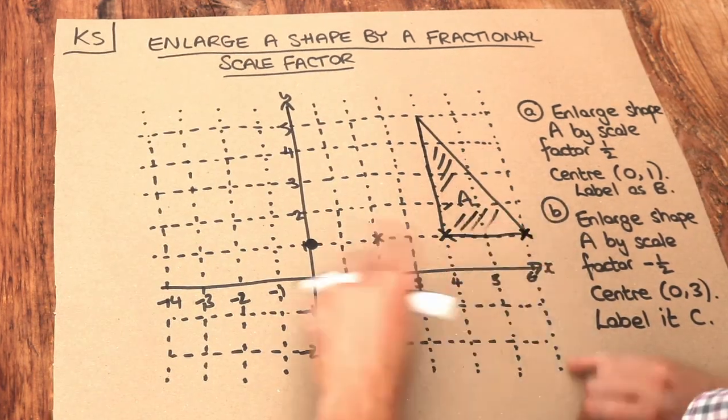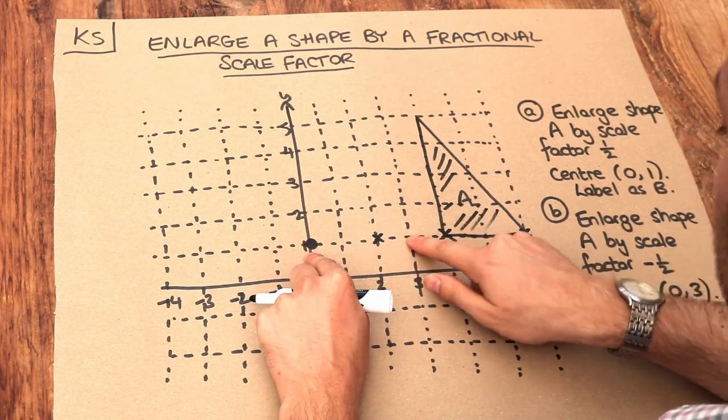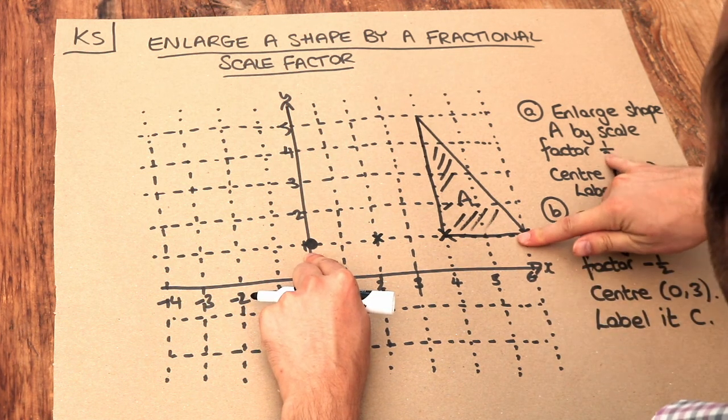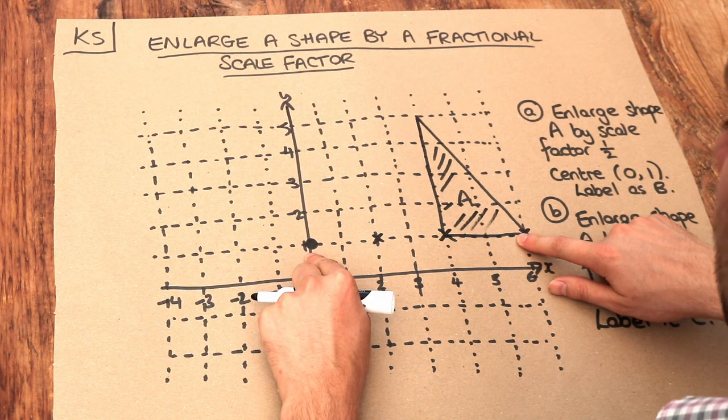Let's do the same for this point. Starting from the centre of enlargement, it's 1, 2, 3, 4, 5, 6 right. Multiplying by the scale factor of half, 6 times half is 3, so it's 3 right.